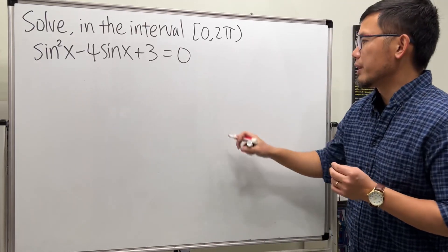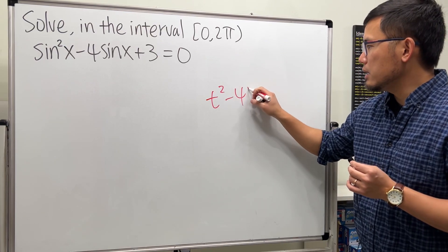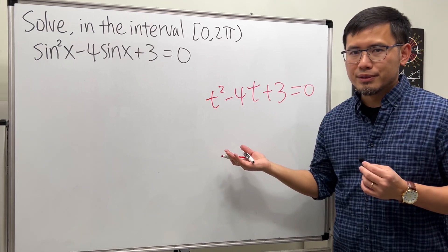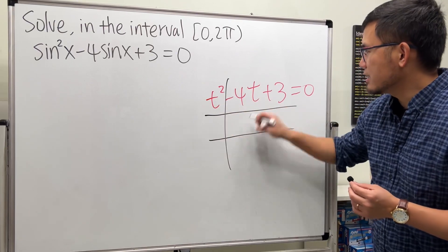You can take a look right here. If today I ask you t squared minus 4t plus 3 equals 0, how would you factor this? You can do the tic-tac-toe method. Go ahead and draw the tic-tac-toe boxes like this.